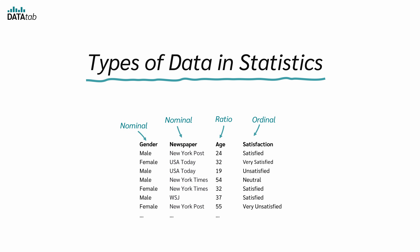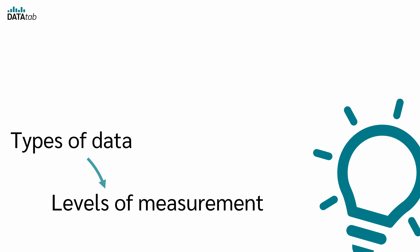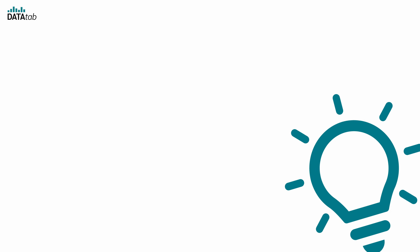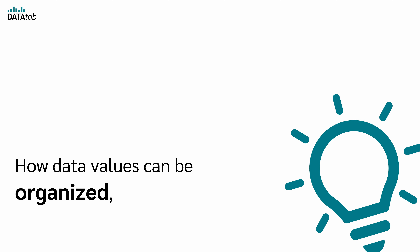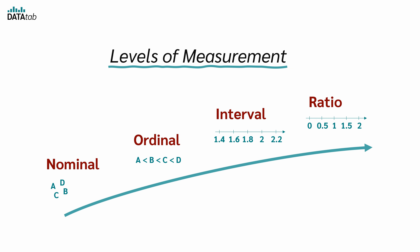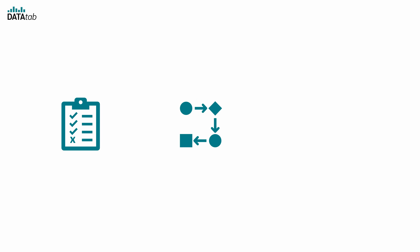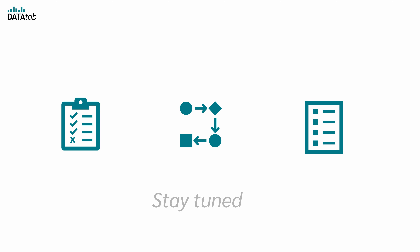Hi, this video is about types of data in statistics. In statistics, types of data are generally referred to as levels of measurement. The term level of measurement specifically emphasizes how data values can be organized, compared and analyzed. In this video, we are going to explore the four levels of measurement – nominal, ordinal, interval and ratio. Each level gives us important information about the variable and supports different types of statistical analysis. By the end of this video, you will know what the levels of measurement are and especially why you need them. So whether you are analyzing survey data, optimizing business operations or studying for a statistics exam – stay tuned!